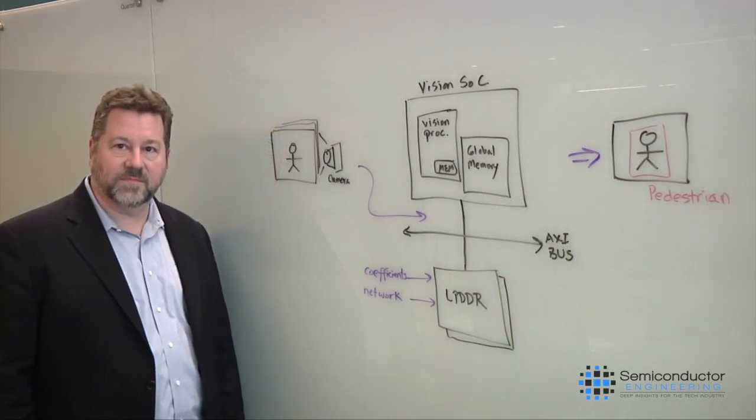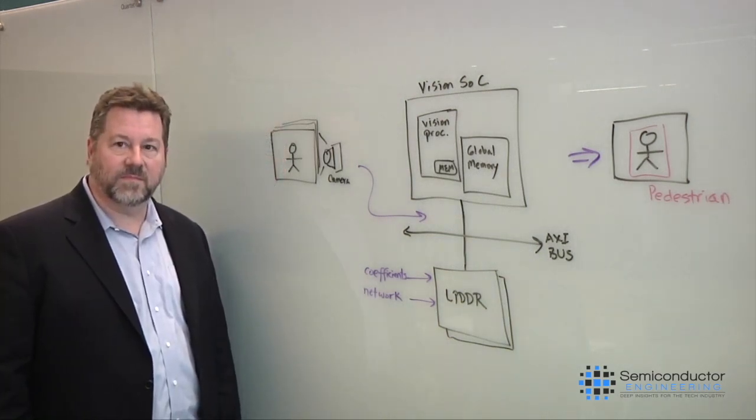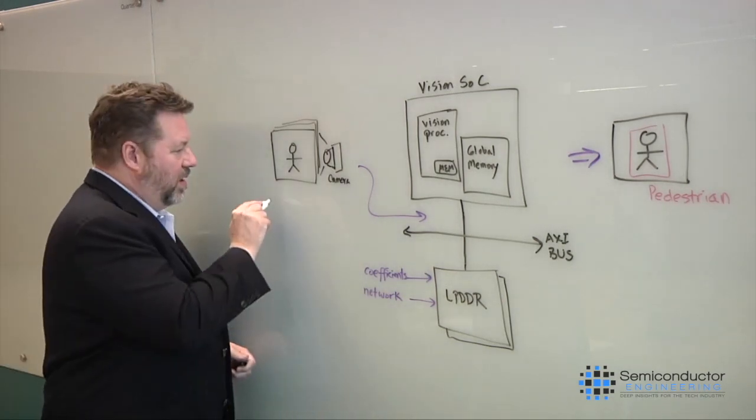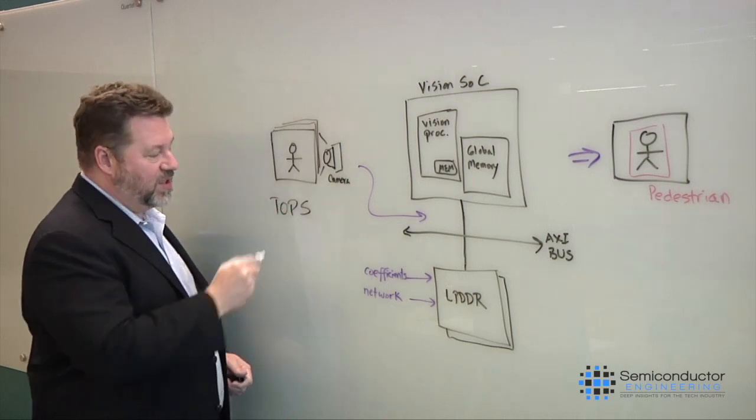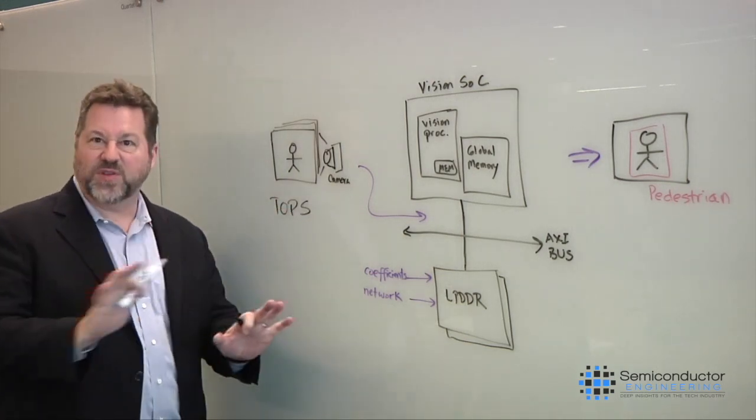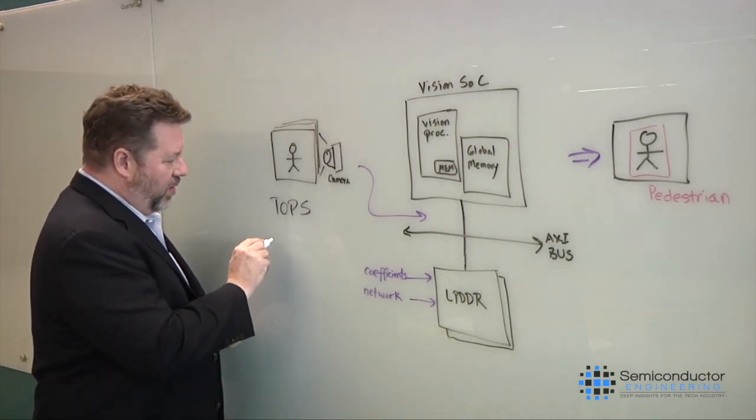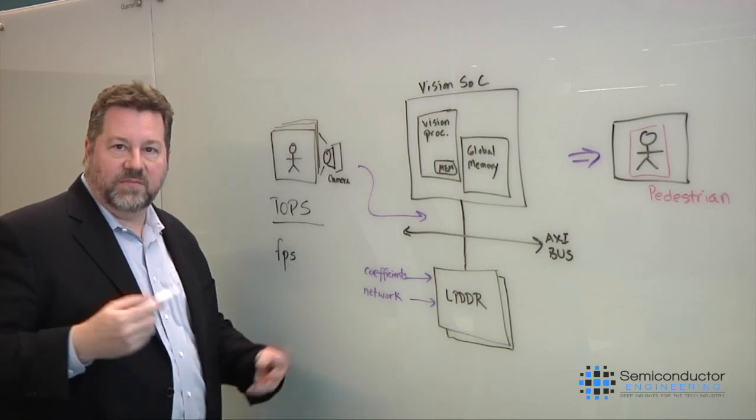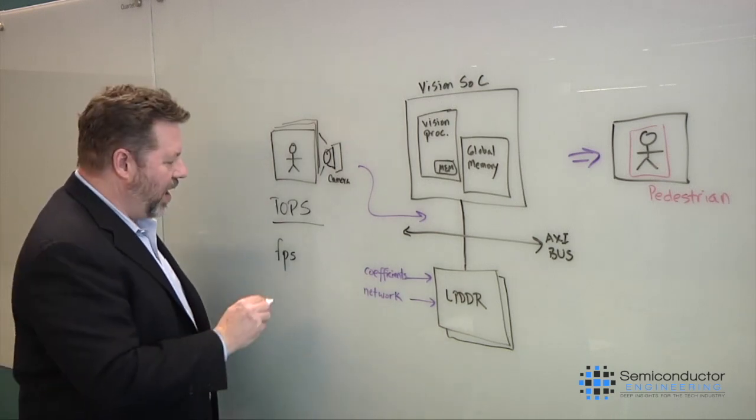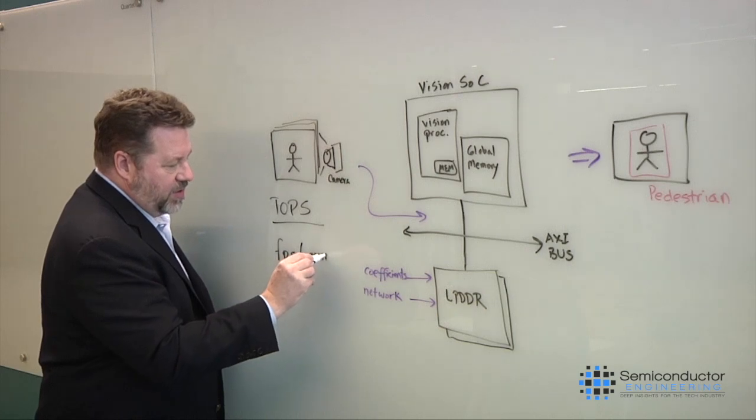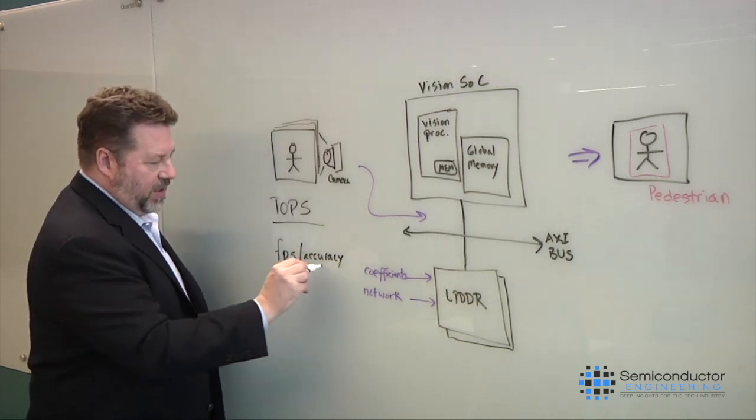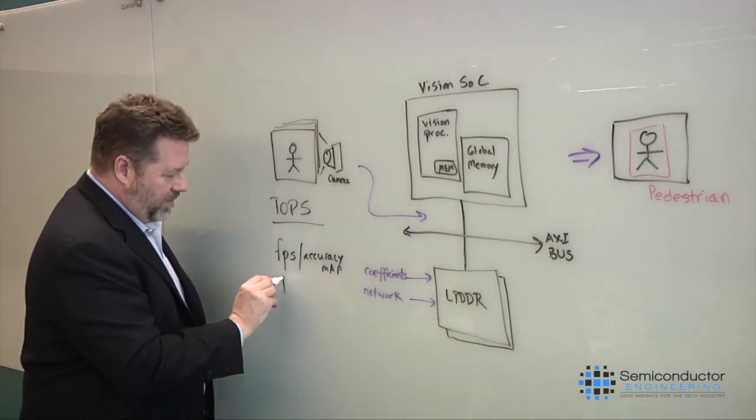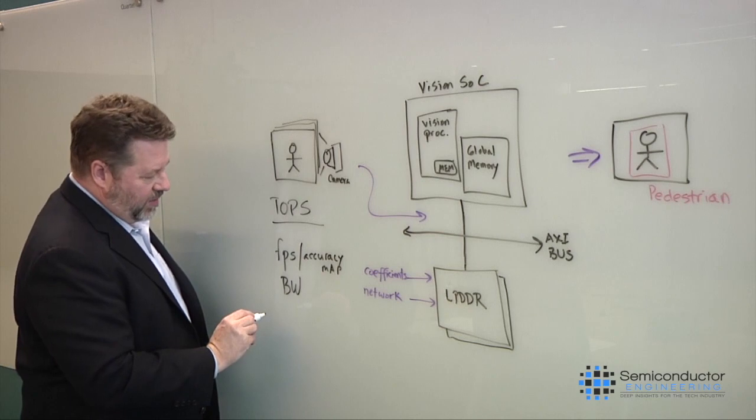So what are you actually measuring in order to improve both performance and lower the power? Yeah, in a vision processor, sometimes people talk about TOPS, where you have trillions of operations, tera operations per second. Now that's a very first order estimate. But what you really want to know is for an individual graph, what is the frame rate I get out of that graph, the performance of that specific graph, and what is the accuracy? And the accuracy is usually measured in MAP. So this is critical, but also bandwidth and also power.